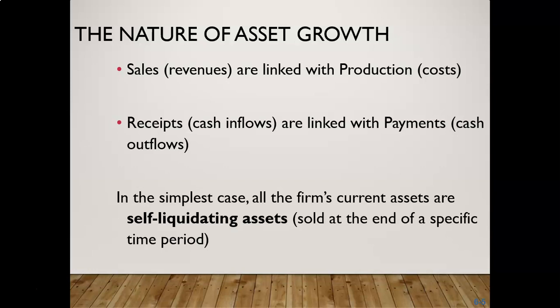The nature of asset growth: if you look at sales, increasing sales is linked with production. If you increase sales, you have to increase production, so there's a cost associated with increasing sales. Equally, as cash is received, there's a link with cash payment — as you receive cash, you also have to make a payment to your creditors. In the simplest case, all the firm's current assets are self-liquidated — they are sold out in a specified time period. We generally say current assets can be converted to cash within a year.